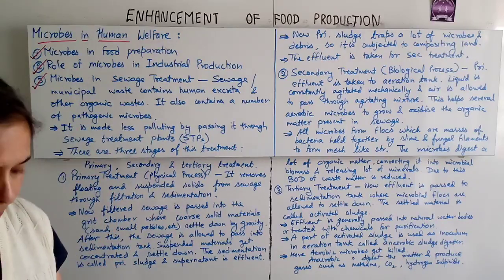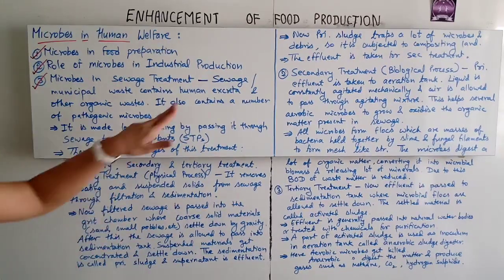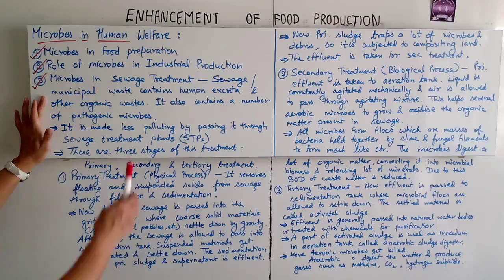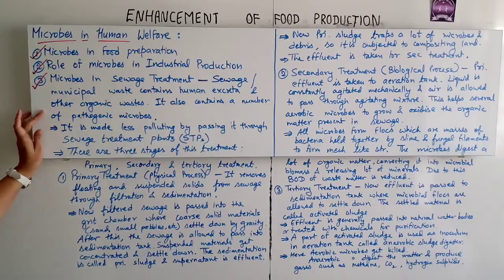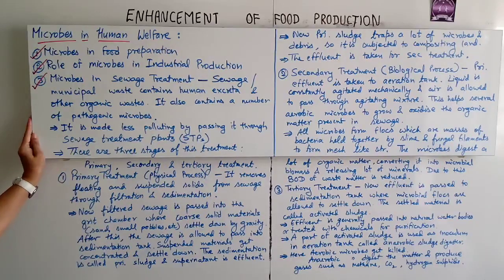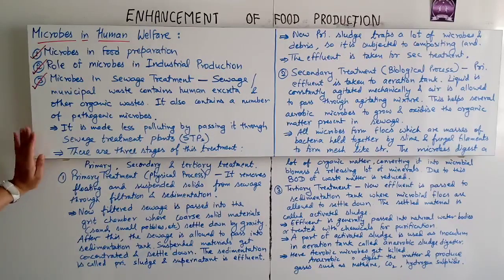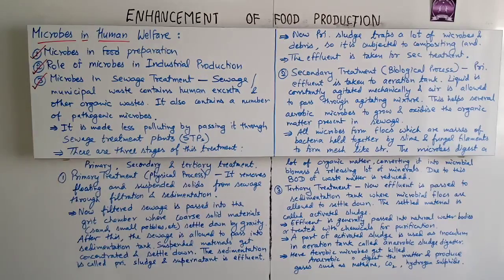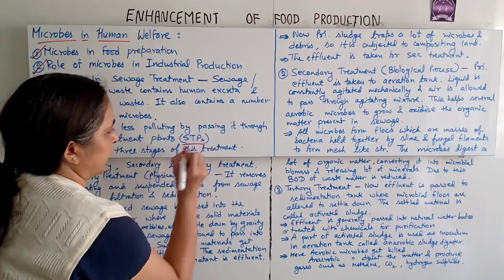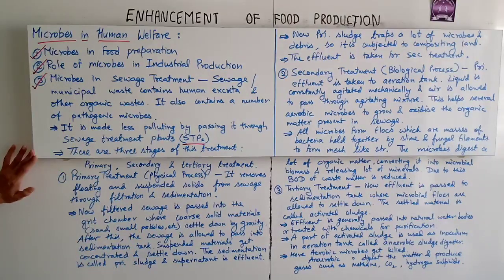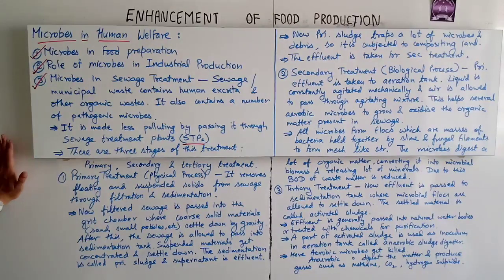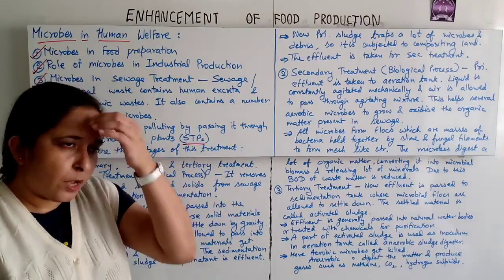Now, microbes in sewage treatment. Sewage or municipal waste contains human excreta and other organic waste. It also contains a number of pathogenic microbes. It is made less polluting by passing it through a sewage treatment plant, or STP. There are three stages: primary, secondary, and tertiary treatment.